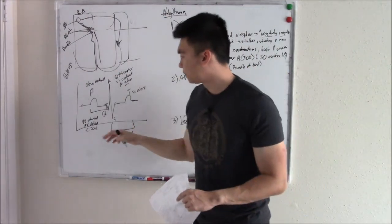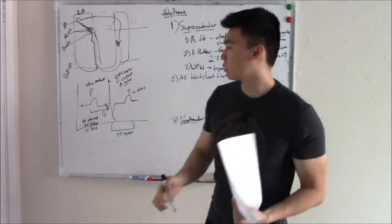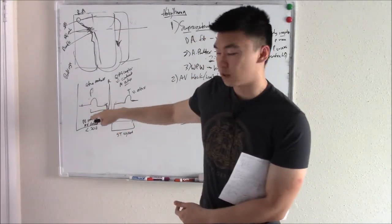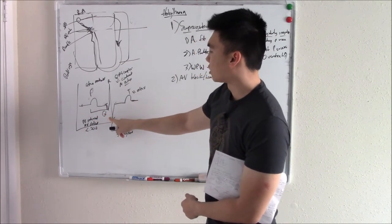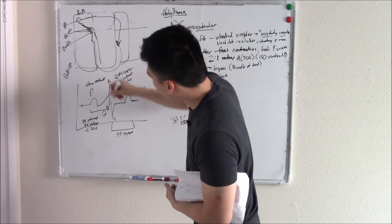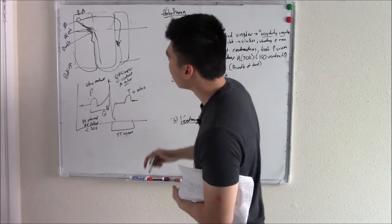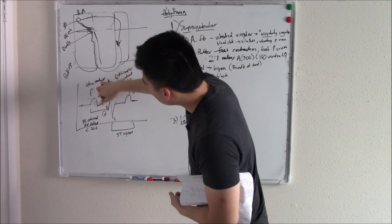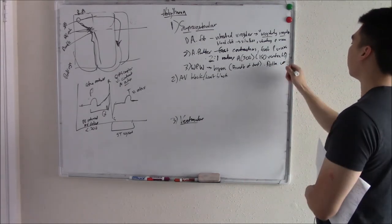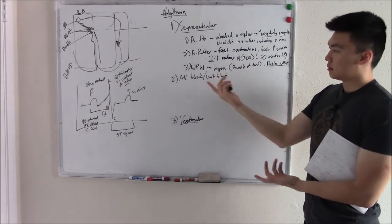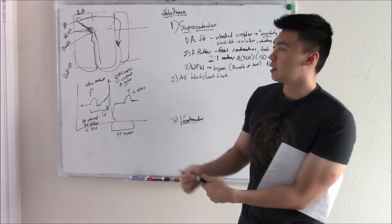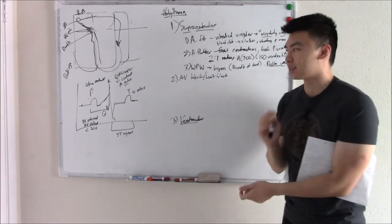In Wolf-Parkinson-White, the PR interval — which normally shows the AV node slowing — is bypassed, so you get a premature ventricular contraction immediately without that delay. On the ECG, this appears as a delta wave at the beginning of the QRS complex. This is very important — I've seen this tested two or three times. They'll zoom into an ECG and ask what's going on: it's Wolf-Parkinson-White.